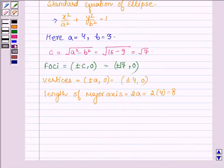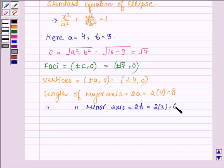Now, let us find the length of minor axis. This is equal to 2 into b. So, we have 2 times of 3 that is equal to 6. Now, let us find the eccentricity. It is denoted by small e is equal to c upon a. So, we have root over 7 upon 4.